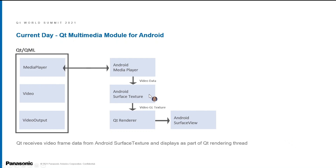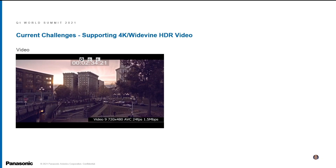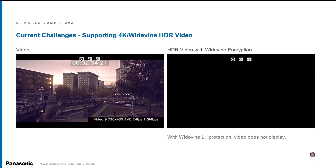Looking at the Qt Multimedia design, we can see that Qt relies on the Android SurfaceTexture component to capture video texture and render that as part of the Qt rendering thread. We only had to make minor changes to support our custom Panasonic video UI and subtitles. This is a screenshot of a non-HDR video. Recently our customers are asking for 4K videos, and at Panasonic we would be delighted to deliver the highest quality videos to our passengers. The problem is that 4K HDR content comes with Widevine L1 protection. When we play HDR video using the Qt Multimedia module, Qt widgets are shown but the video is blank.